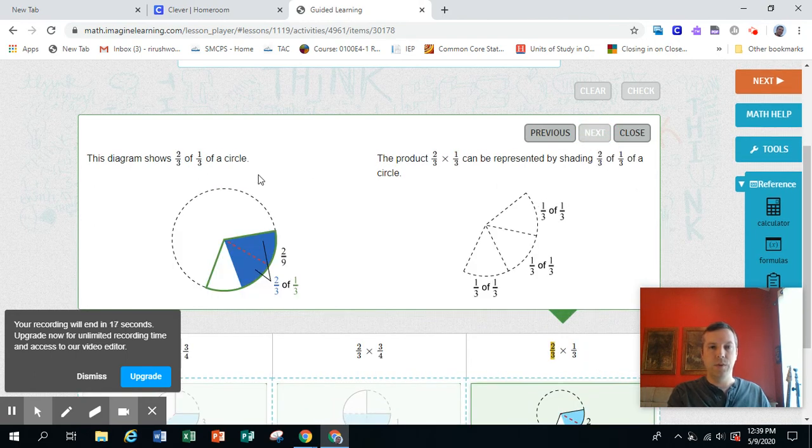This diagram shows 2 thirds of 1 third of a circle. 1 third outlined in green. 2 thirds of that shaded blue.